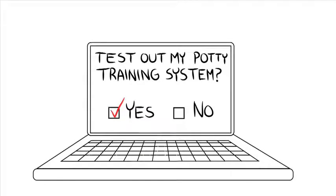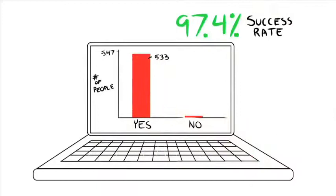I sent my test subjects my potty training system to try out for seven days. After that time period had ended, I contacted each of them and asked if their son or daughter was successfully potty trained. An impressive 533 out of 547 of the test parents responded with yes.